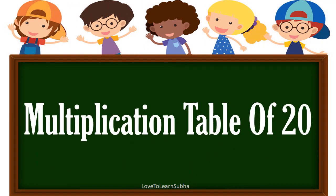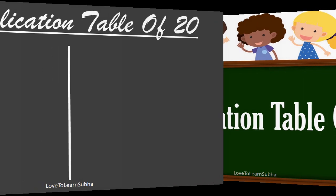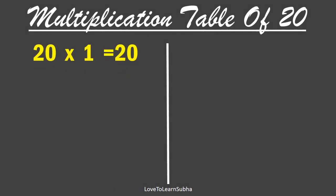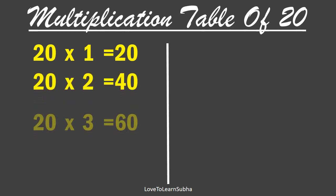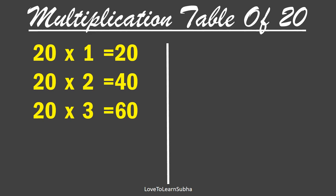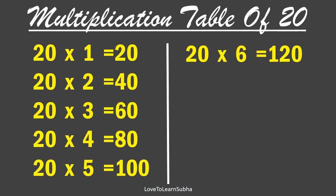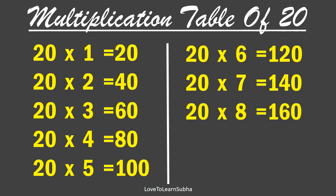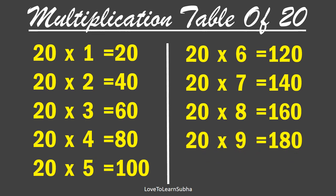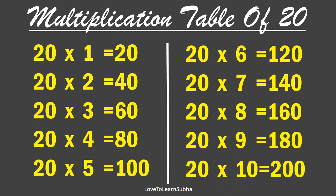Multiplication table of 20. 20×1 is 20, 20×2 is 40, 20×3 is 60, 20×4 is 80, 20×5 is 100, 20×6 is 120, 20×7 is 140, 20×8 is 160, 20×9 is 180, 20×10 is 200.